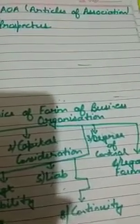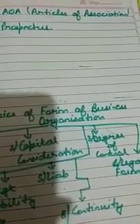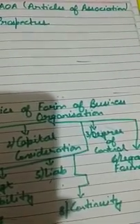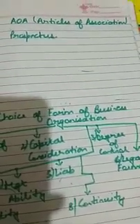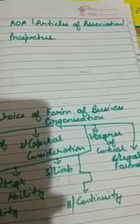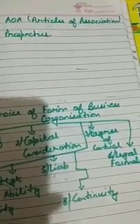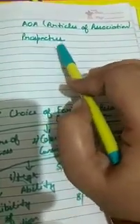I have told you that we have done one document that is Memorandum of Association, which is known as MOA, also known as the doctrine of outdoor management and the principal document of the company. We have done its various clauses also, like name clause, situation clause, liability clause, capital clause, association clause, and today we are doing the next two important documents: AOA, that is Articles of Association, and the third one, the Prospectus.